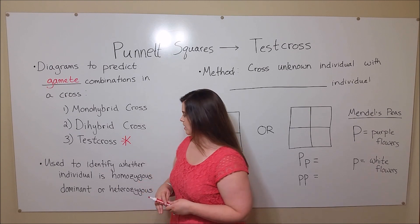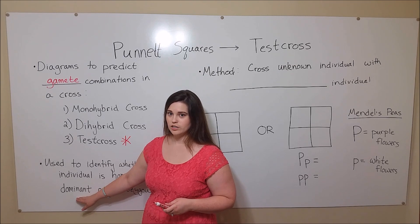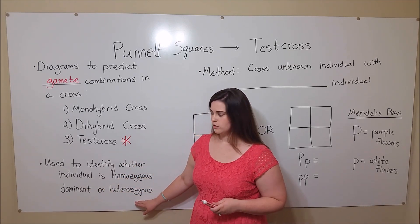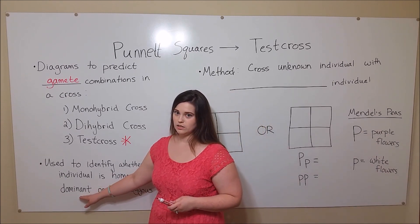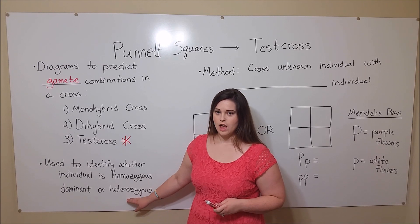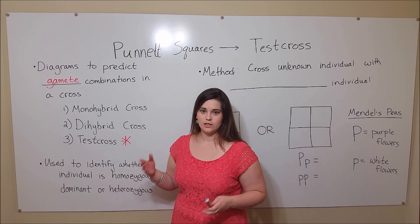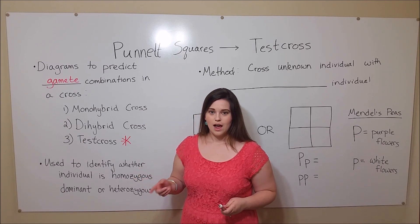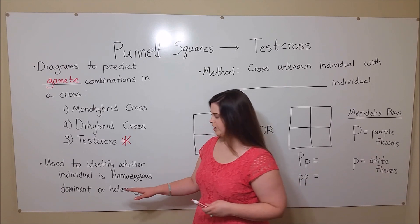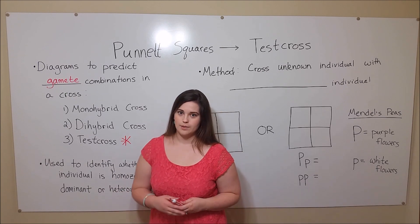Sometimes you can have an individual that is homozygous dominant for a character, or heterozygous for a character. This means that they have two dominant alleles, or one dominant allele and one recessive allele. The problem is that if they're homozygous dominant or heterozygous, they look the same — they have the same phenotype.